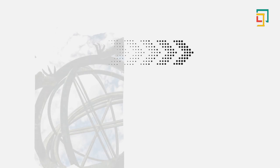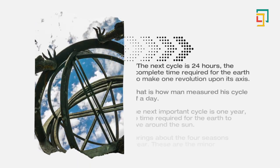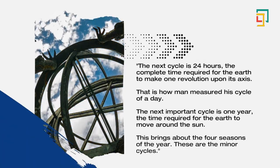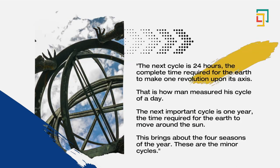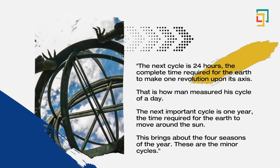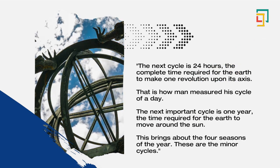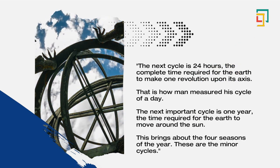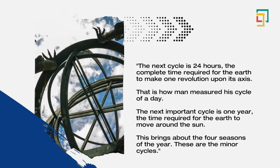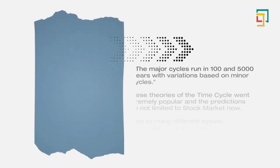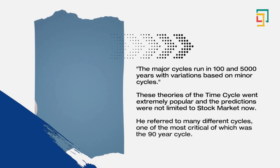The next cycle is 24 hours, the complete time required for the Earth to make one revolution upon its axis. That is how man measured his cycle of a day. The next important cycle is 1 year, the time required for the Earth to move around the Sun. This brings about the 4 seasons of the year. These are the minor cycles. The major cycles run in 105,000 years with variations based on minor cycles.